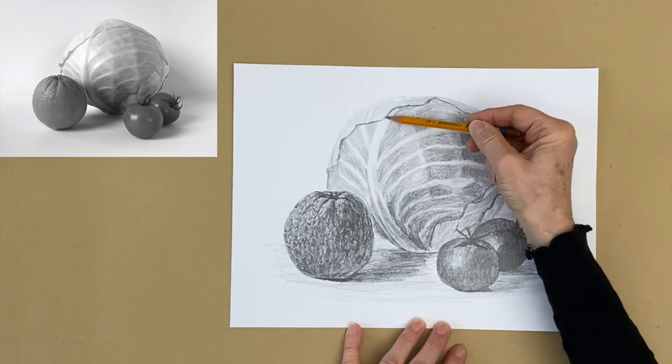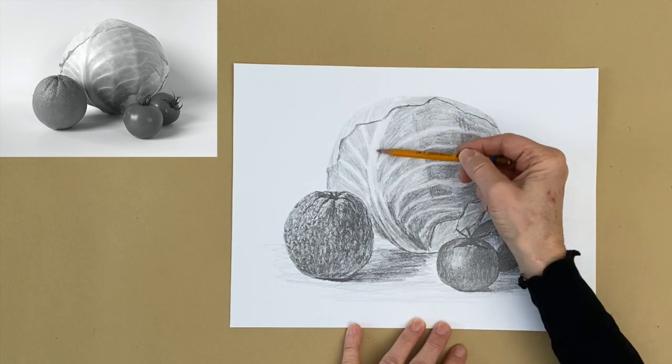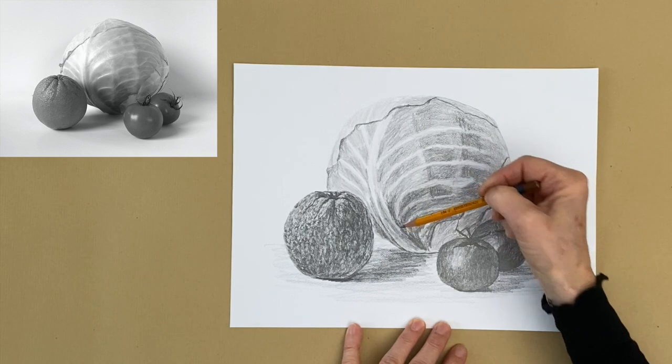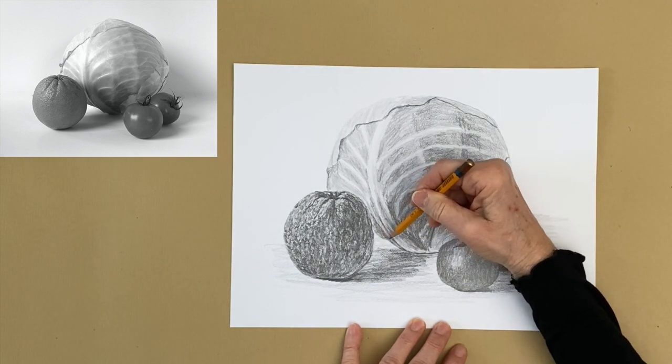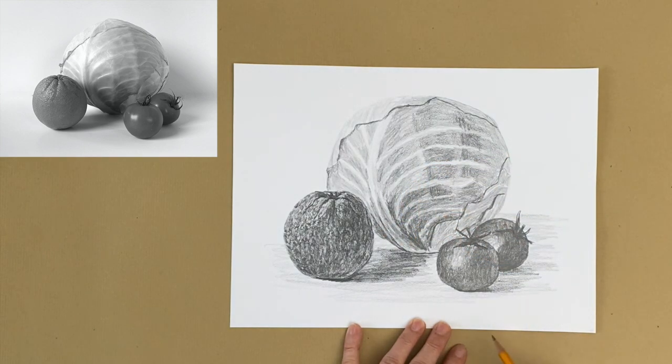And of course you can always make the cast shadows more distinctive. You can do all your markings on your vegetables more distinctive. But I'm going to leave it like that now because as an exercise, I think that will do.